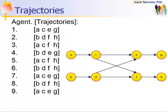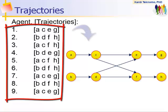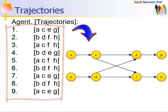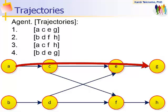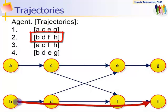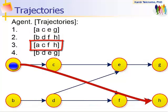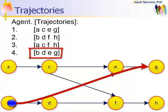For simplicity, now suppose we have tracked only 9 trajectories on how our agents use the network. Because our network is very simple, we have only 4 types of trajectories. The first trajectory moves from A to C to E and to G. The second trajectory moves from B to D to F and to H. The third trajectory moves from A to C to F and to H. The fourth trajectory moves from B to D to E and finally to G.